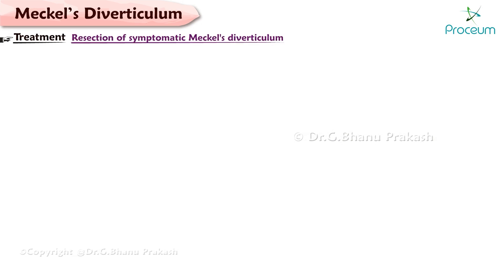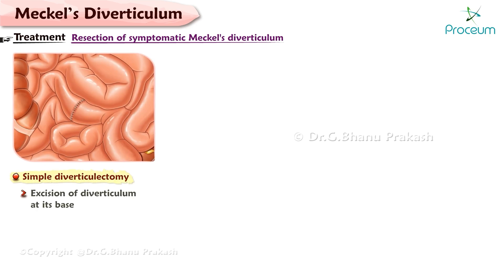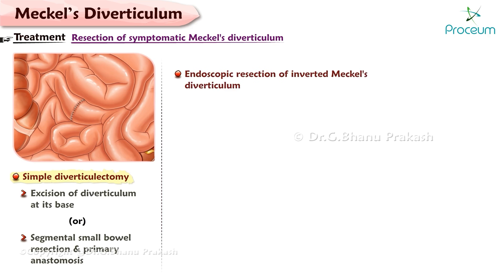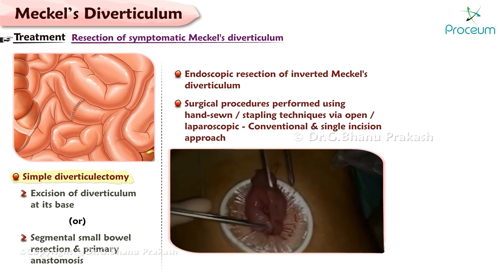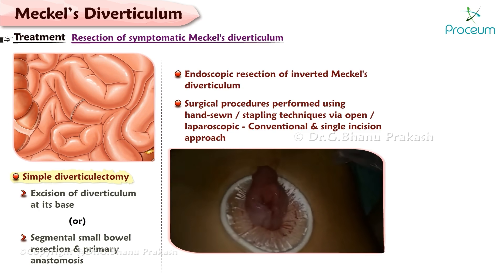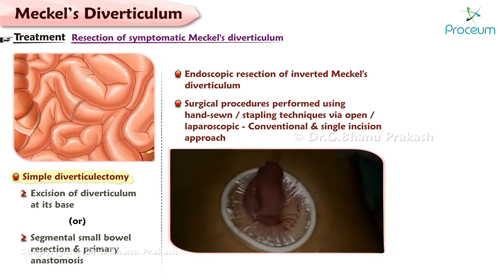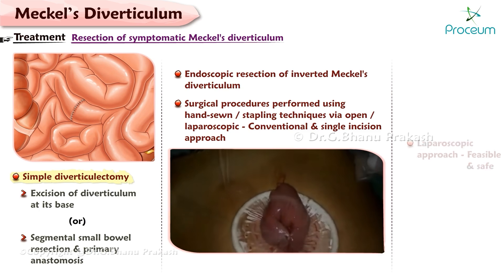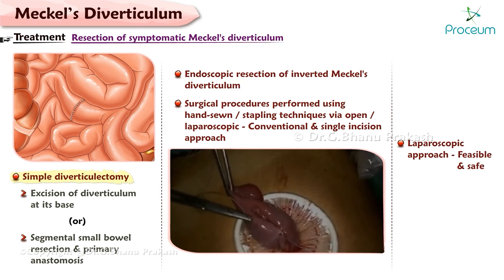Resection of symptomatic Meckel's Diverticulum can be performed by simple diverticulectomy, excision of the diverticulum at its base, or by segmental small bowel resection and primary anastomosis. Endoscopic resection of an inverted Meckel's Diverticulum has also been reported. Surgical procedures can be performed using hand-sewn or stapling techniques via an open or laparoscopic approach, including both conventional and single-incision techniques. A laparoscopic approach is likely feasible and safe.